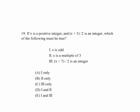We're given here that x is a positive integer, and x plus 3 over 2 is an integer, which the following must be true. Well, if it's an integer, that means it's a positive or negative whole number, or 0. So for x plus 3 over 2 to be an integer, x plus 3 has to be even.